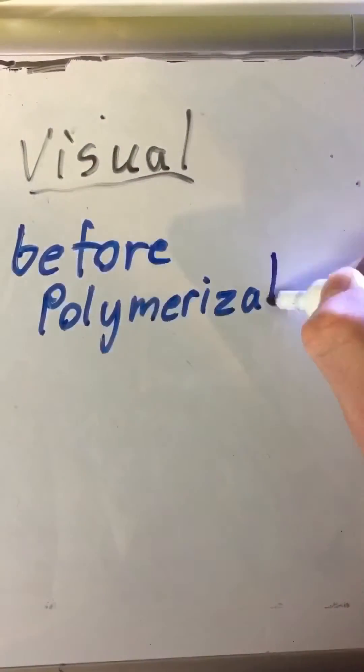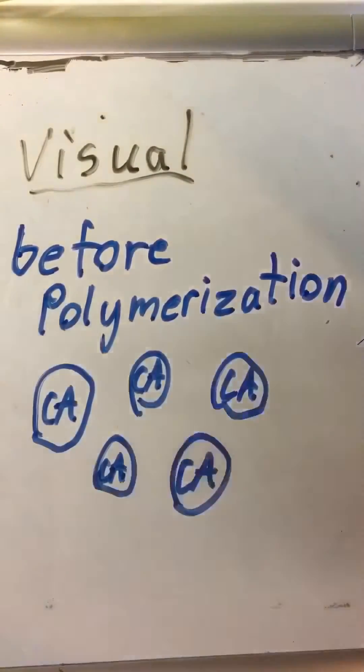So, as a picture, before polymerization, you can see that all the cyanoacrylate molecules are separated and not joining each other.